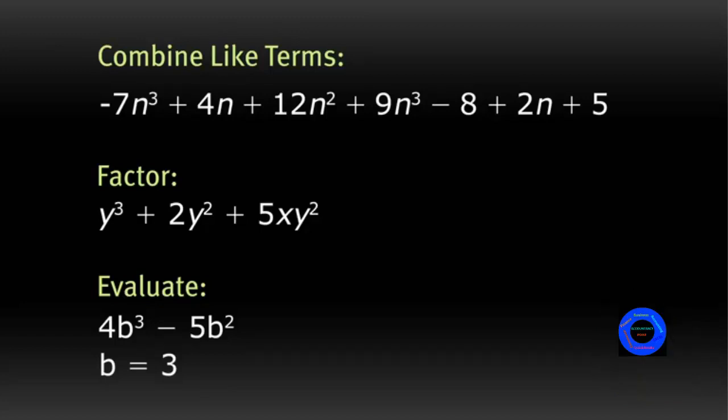So let's go through your answers. For the first one, you can combine the n cubed, the n squared, the n's, and the constants to give you 2n cubed plus 12n squared plus 6n minus 3.